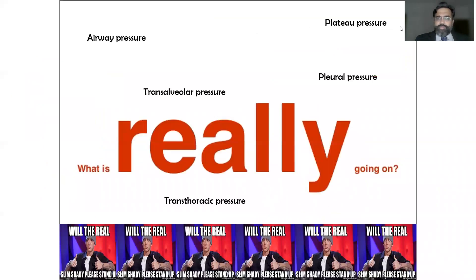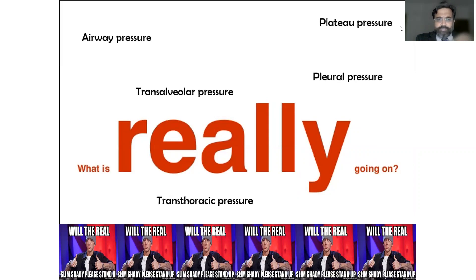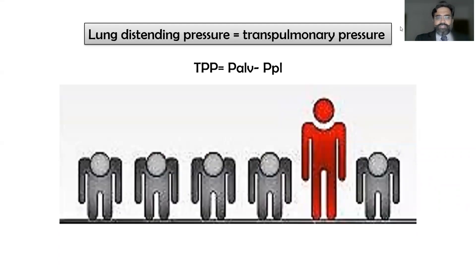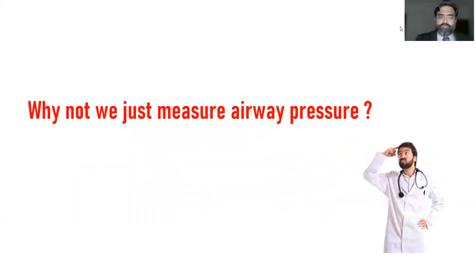Which pressure is the real one? Is it the airway pressure, the transpulmonary pressure, the plateau pressure, the pleural pressure, the trans-alveolar pressure, or the transthoracic pressure? The real lung distending pressure is the transpulmonary pressure, which is nothing but the difference between the alveolar pressure — or the plateau pressure — minus the pleural pressure. That is what transpulmonary pressure is all about.